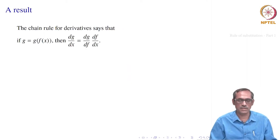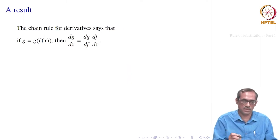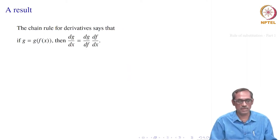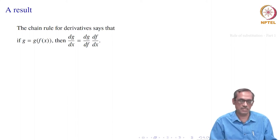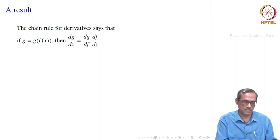The rule of substitution does not come out of the blue — it comes from the chain rule for derivatives. Recall that the chain rule says: if you have a composite function like g of f of x, then dg/dx will be equal to dg/df times df/dx when you take the derivatives.